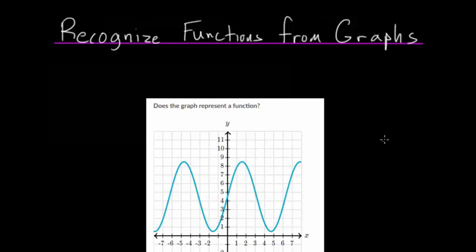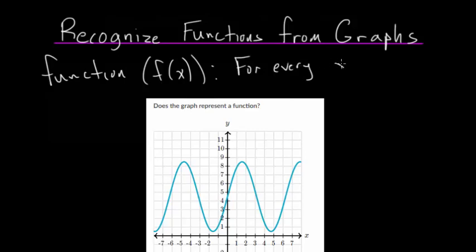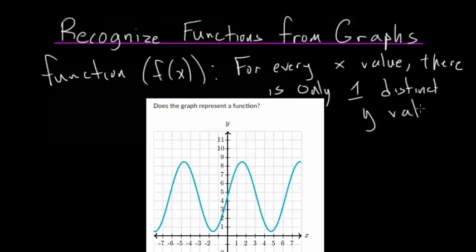So to answer that question, let's first look at the definition of a function. If we have a function, and let's say that function is f of x, then for every x value, there is only one distinct y value. So if you plug an x value into a function, it can't give you two different y values as the result. There's only ever one y value that actually satisfies the function.